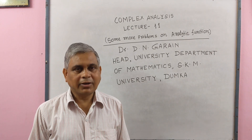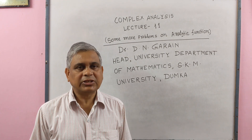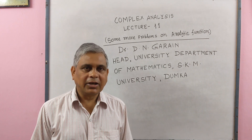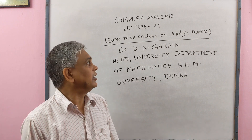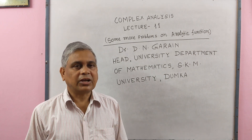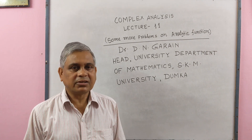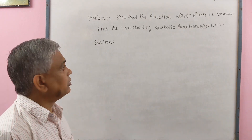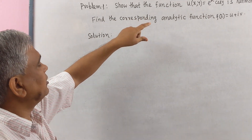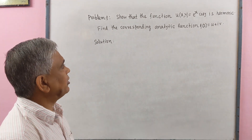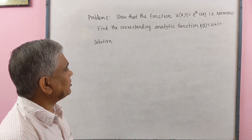Namaste and welcome to my YouTube channel. Today I will deliver lecture number 11 on complex analysis, in which some more problems of analytic functions will be discussed. We will solve a problem: show that the function u(x,y) = eˣ cos y is harmonic and find the corresponding analytic function f(z) = u + iv.